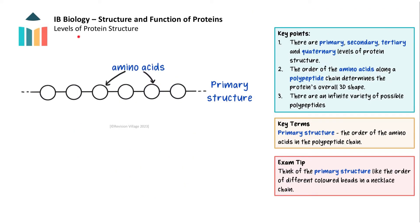Now let's look at the different levels of structures of proteins. The primary structure of a protein refers to the specific sequence of amino acids that make up the polypeptide chain. It is the most fundamental level of protein structure and plays a crucial role in determining the protein's overall structure and hence its role. The sequence of amino acids is determined by the genetic code stored in an organism's DNA.